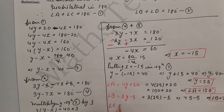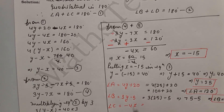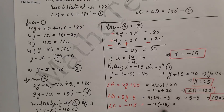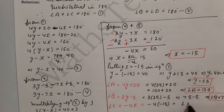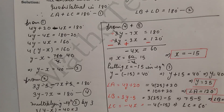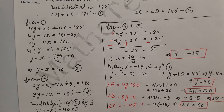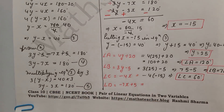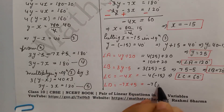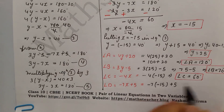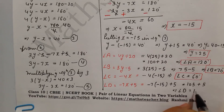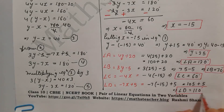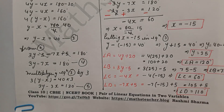Now angle C equals minus 4x. Putting x equals minus 15: minus 4 times minus 15 — negative times negative is positive — so 4 times 15 equals 60, giving angle C equals 60°. Finally, angle D equals minus 7x plus 5. Putting x equals minus 15: minus 7 times minus 15 plus 5 equals 105 plus 5, so angle D equals 110°.